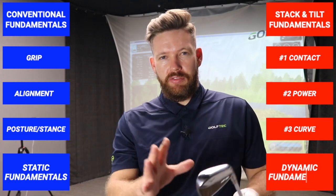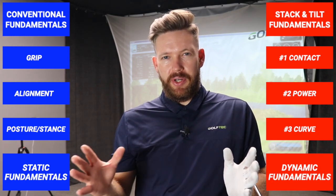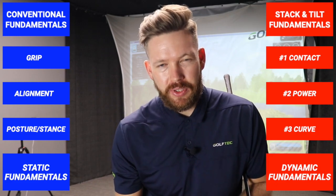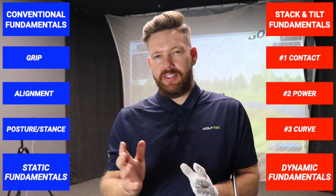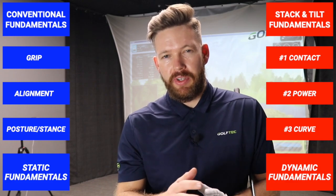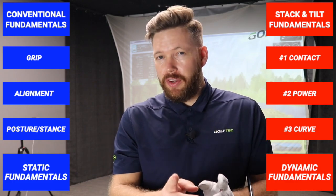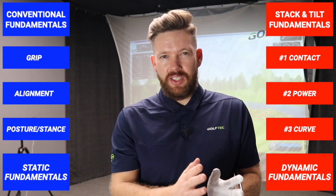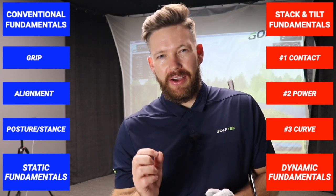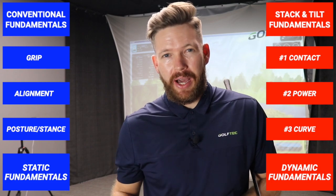In the conventional golf swing we have grip, alignment, posture, and stance. In the stack and tilt golf swing we have contact, power, and controlling the curve. The conventional swing has always been about how you set up to the golf ball, whereas in the stack and tilt swing, setup is a variable - the keys are how you swing the club, make contact, and create power.